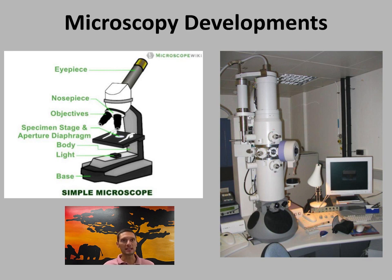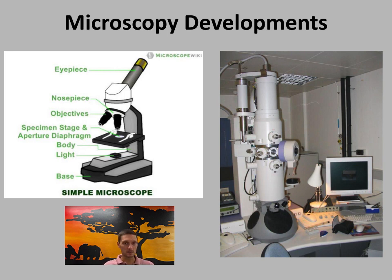Microscopes were first invented in the 17th century, and there have been lots of advancements since then. 19th-century advancements allowed bacteria and unicellular organisms to be observed, as well as chromosomes, the processes of mitosis and meiosis, and individual gamete cells — sperm and egg cells. Those developments led to improvements in magnification.